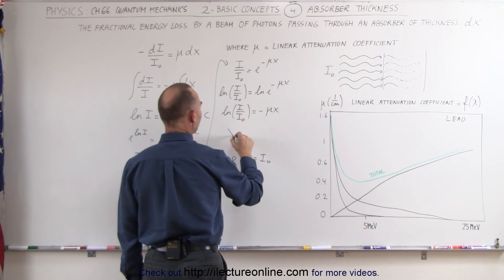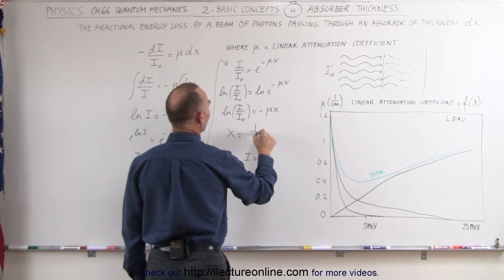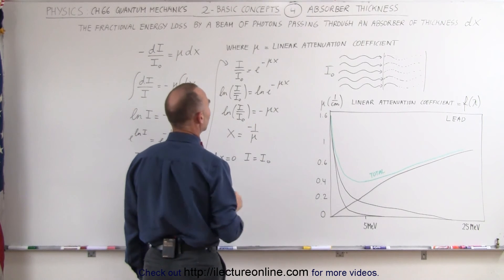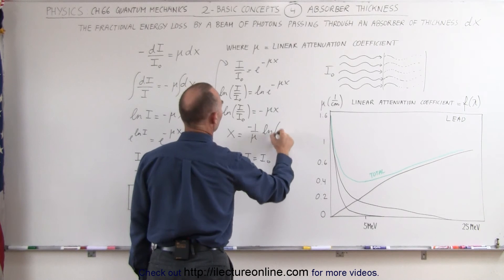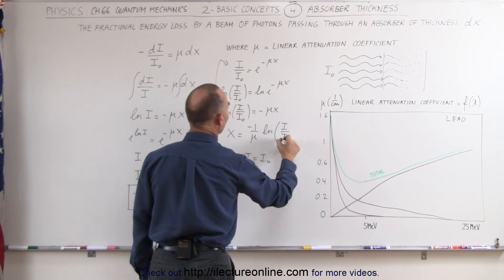And finally if I want to solve this for x, I get x is equal to minus 1 over μ times the natural log of the ratio of the intensity divided by I sub naught.